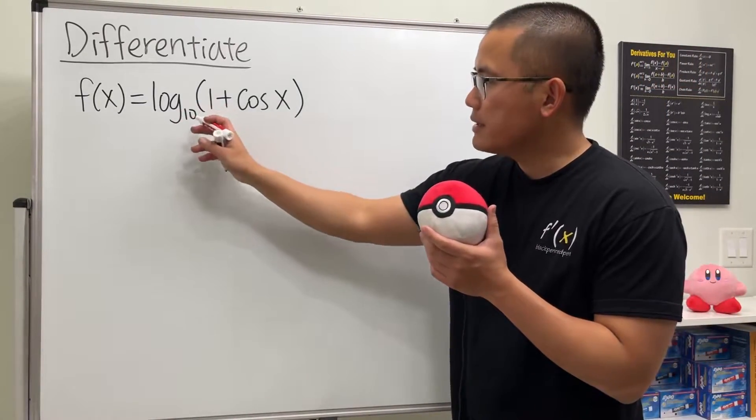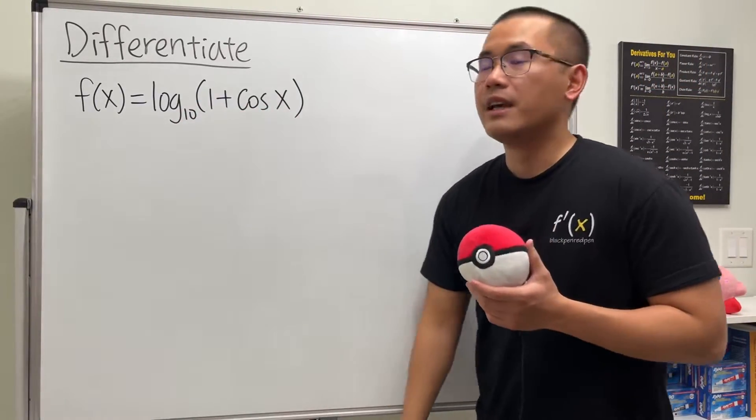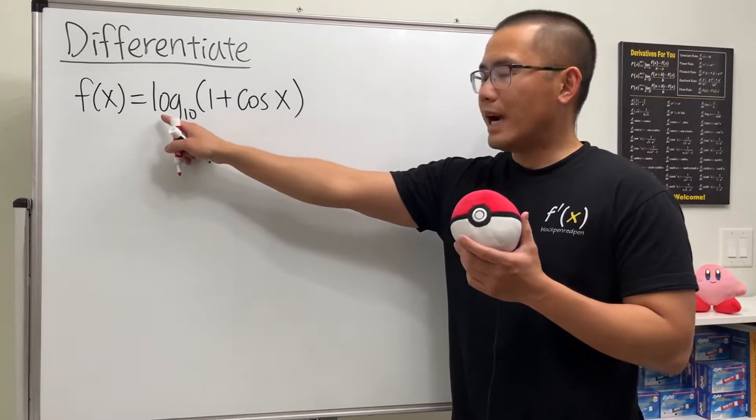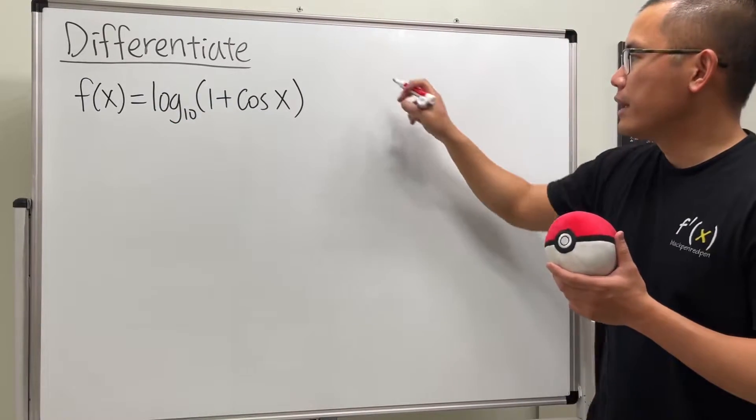Here we are going to differentiate log base 10 of 1 plus cosine x. We will have to remember the derivative for log base 10, and let me put that down right here for you guys.